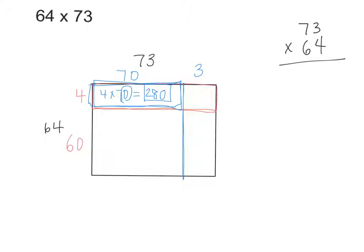Now how can I find the area of this little box right here? Well, what's this top dimension? 3. And what's this one right here? 4. So 3 times 4 is 12. So that's another partial product, isn't it?